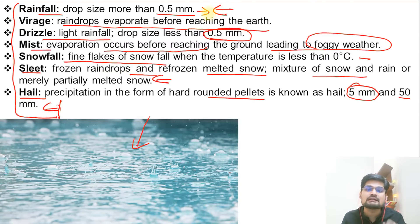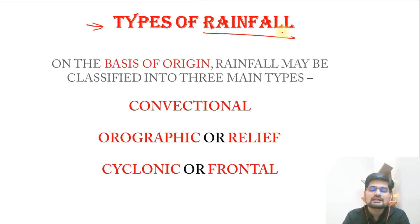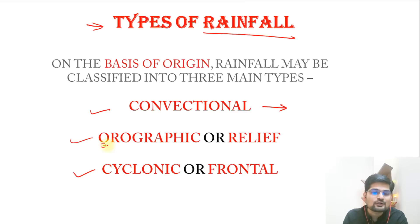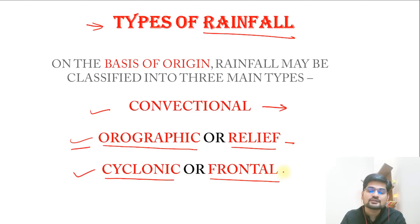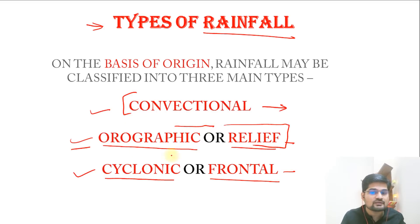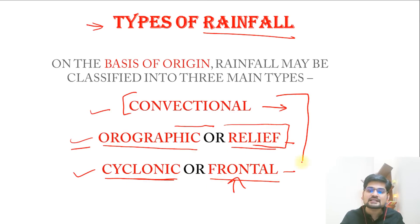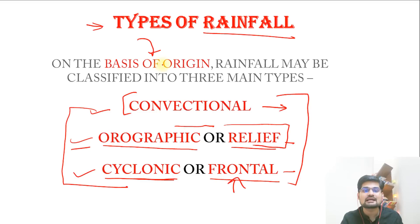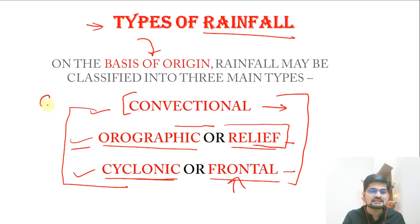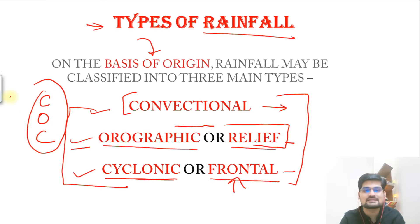Now, going by NCERT, there are three types of rainfall. One is convectional rainfall, the second is orographic rainfall — also called relief rainfall or topographic rainfall — and the third is cyclonic or frontal rainfall. Remember this as COC. These three types are categorized based on the origin or process through which rainfall is generated.